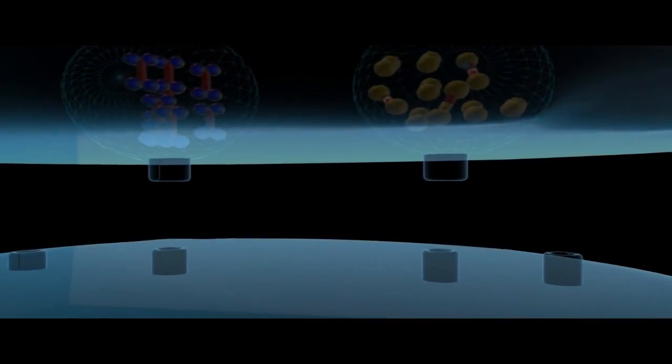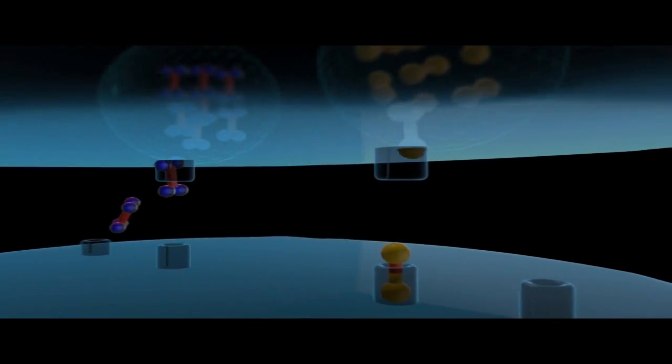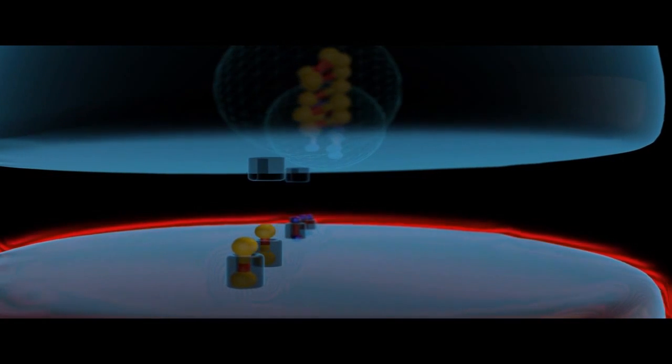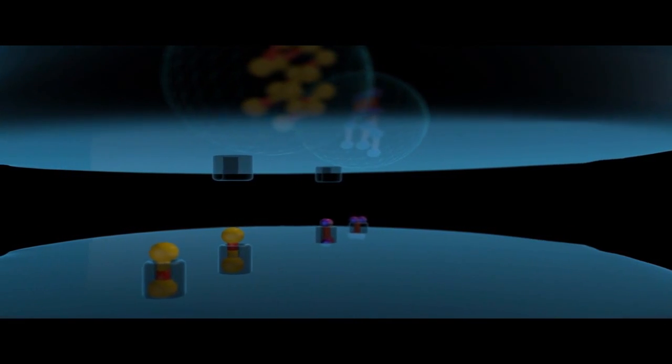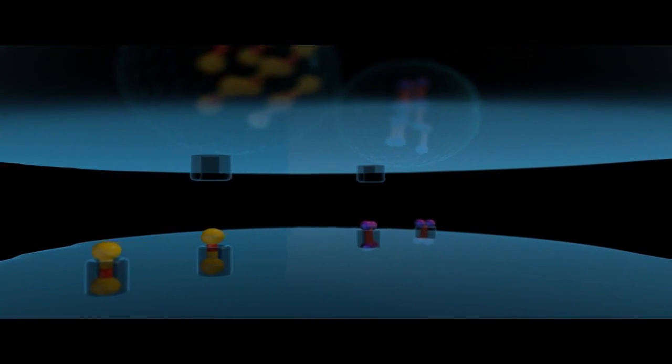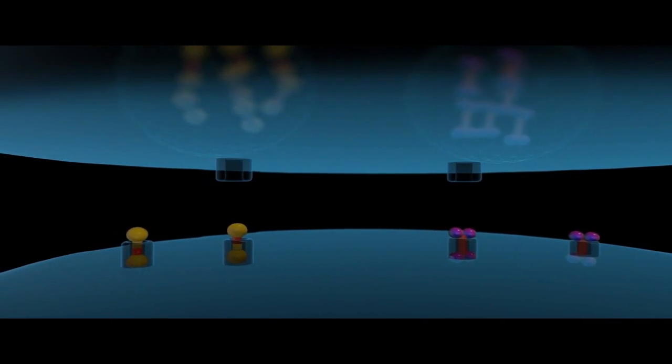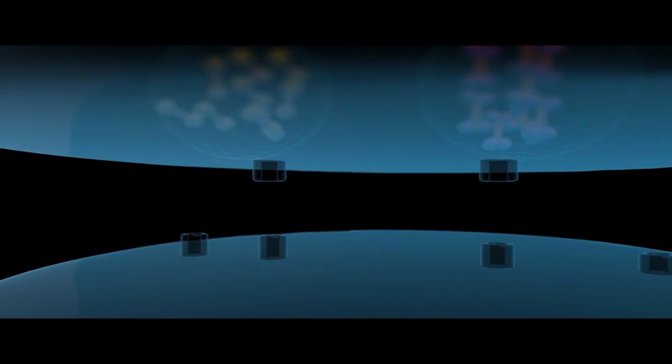Different neurotransmitters have different shapes and correspondingly different shaped receptor sites. Once the neurotransmitter has found the proper receptor, it triggers the receiving cell to release the same type of neurotransmitter to adjoining cells. This vast and complex system controls everything that is happening within our bodies.